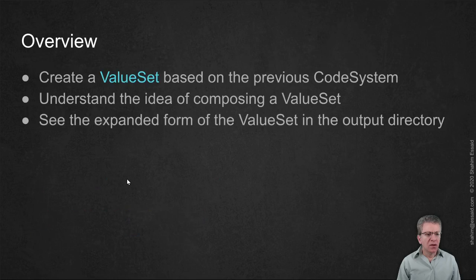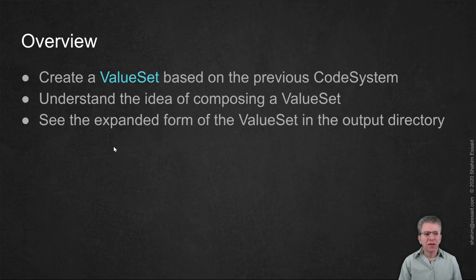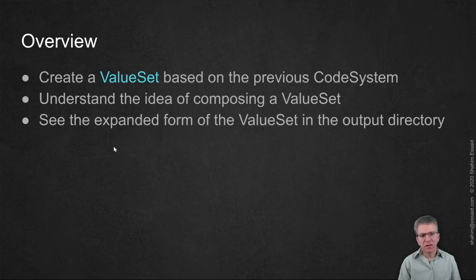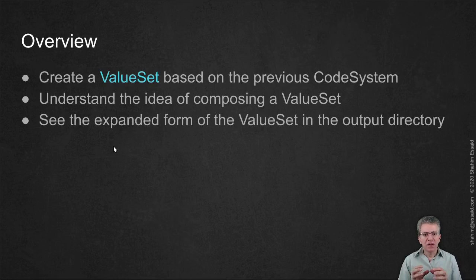A value set is a set of values, sort of like an enumeration — not their definition, it's not like a dictionary. It's just a list of values that can be used in certain fields within the rest of the data model. You define the value sets you need, and then you could choose to say this field in one of the other resources can only contain a value from this value set.